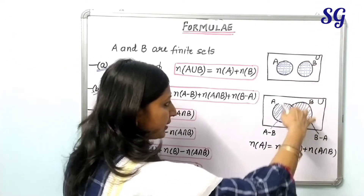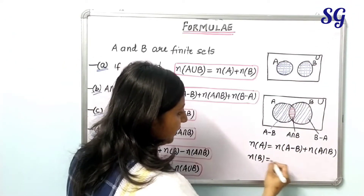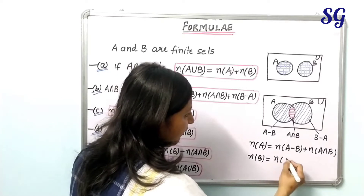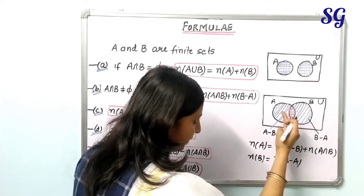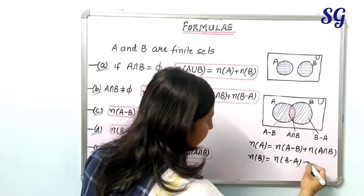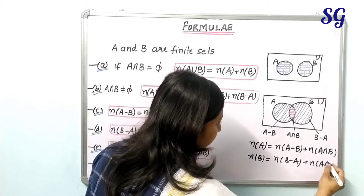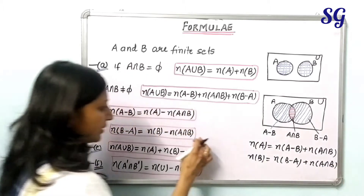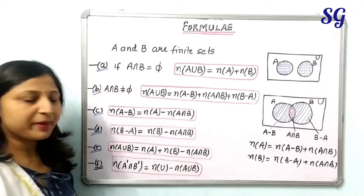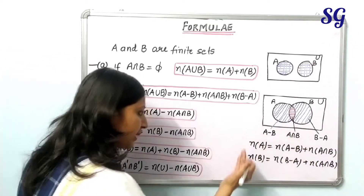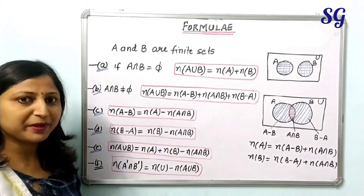Similarly, if we talk about B, the whole region representing B equals the number of elements in B minus A — the blue region — plus the number of elements in A intersection B. From here we can write that the number of elements in B minus A equals the number of elements in B minus the number of elements in A intersection B.